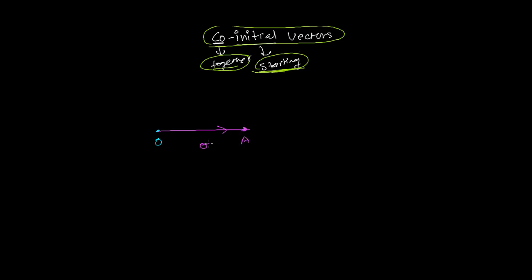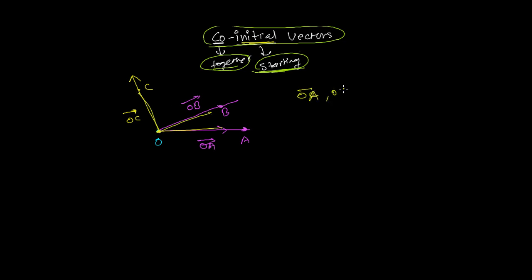Similarly, from the same point O, let's say another vector OB starts — this is vector OB. And one more vector OC also starts from the same point O. So all these vectors — OA, OB, and OC — have the same initial point O, and that's why all three are co-initial vectors.